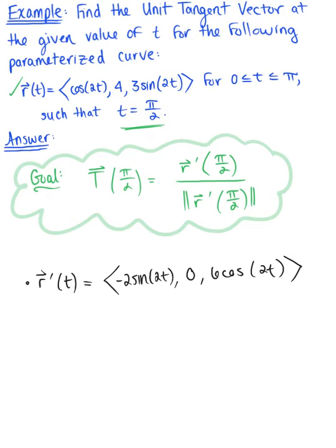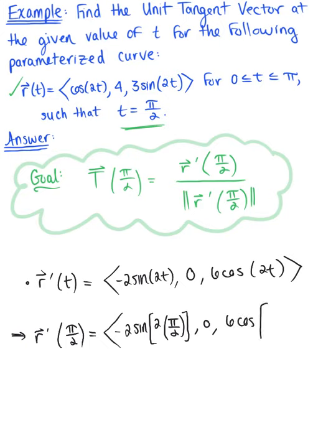We are ready to evaluate. What is the tangent vector going to be at π/2? Plugging this in, we have -2 multiplied by sin of 2 multiplied by π/2, 0 still remains 0, and then we have 6 multiplied by cos of 2 times π/2.